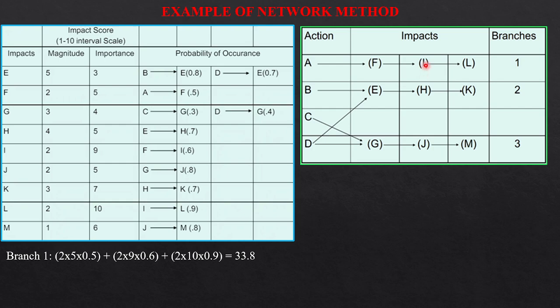For I, I have to use 2 into 9. I due to F, the value is 0.6. So I multiply it with 0.6. And then for L, the value in terms of magnitude and importance is 2 and 10. I multiply 2 with 10 and L due to I is 0.9. So I multiply it with 0.9. The branch 1's value is 33.8.